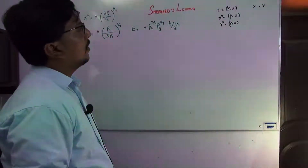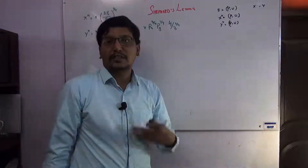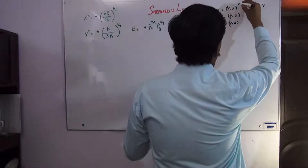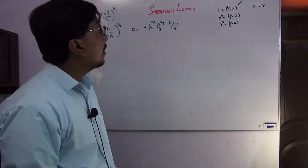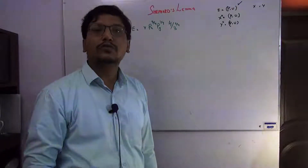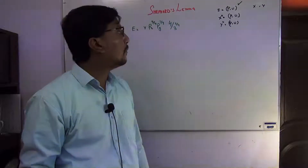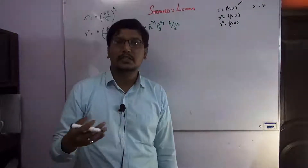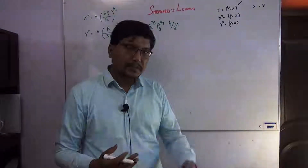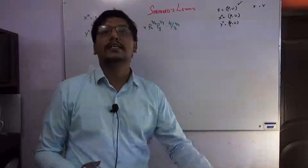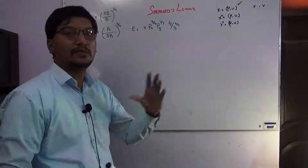Suppose only the expenditure function is available and someone asks you to calculate the Hicksian demand function. Given the expenditure function, you need to calculate the Hicksian demand function — or more simply, the demand function. We use Shephard's Lemma to do this.